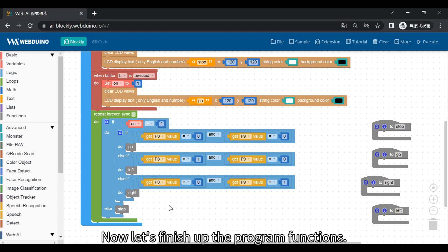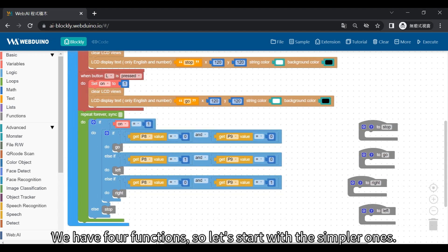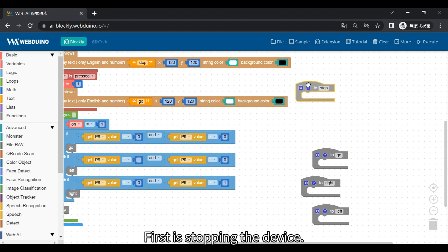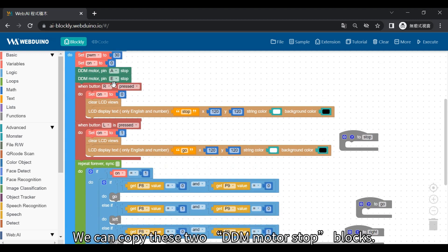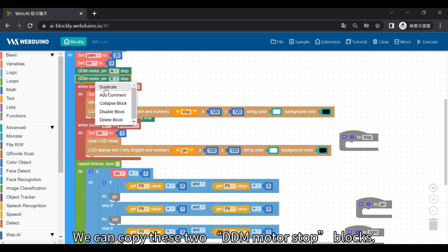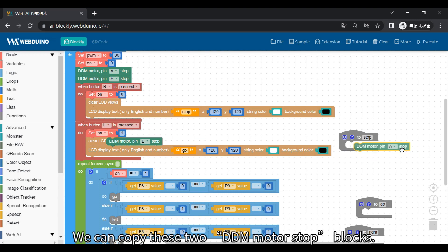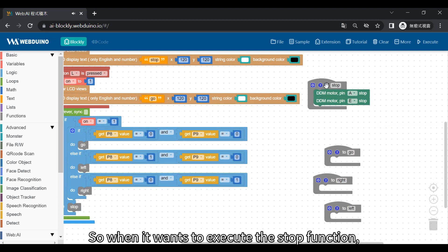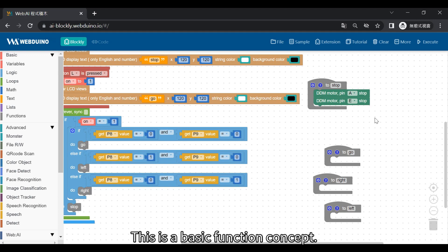Now let's finish up the program functions. We have four functions, so let's start with the simpler ones. First is stopping the device. We can copy these two DDM motor stop blocks. So when it wants to execute the stop function, it will execute these two programs. This is a basic function concept. That completes the stop function.